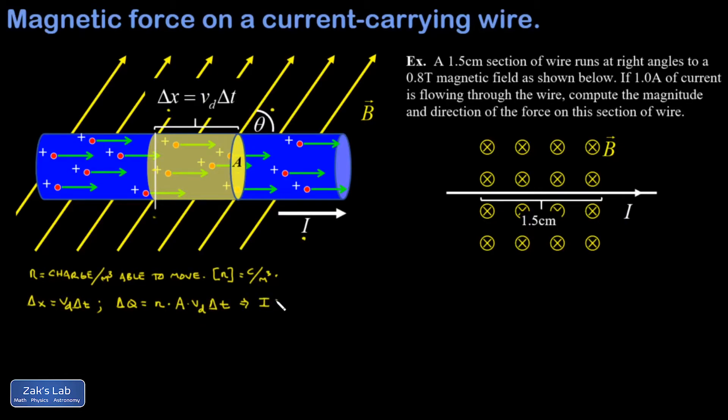This means I can write down a new expression for current as the amount of charge per time flowing through the wire. Delta Q divided by delta T, and that's just n A times the drift velocity of the charge carriers.